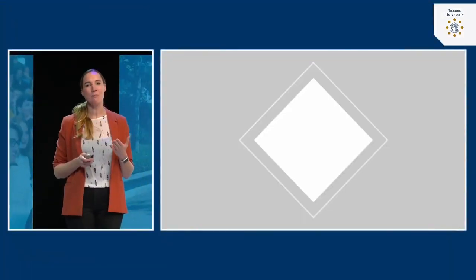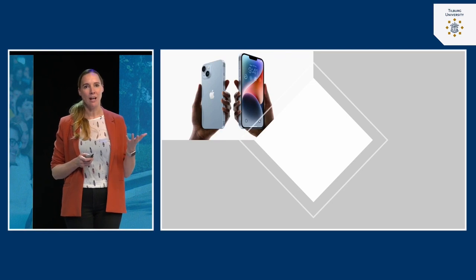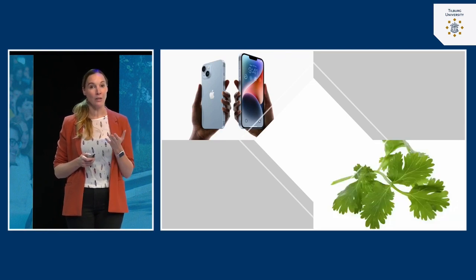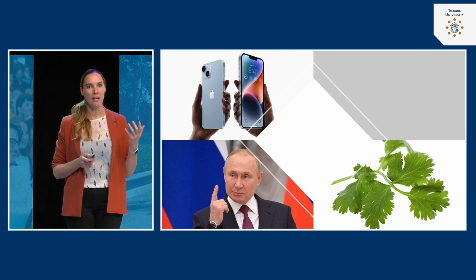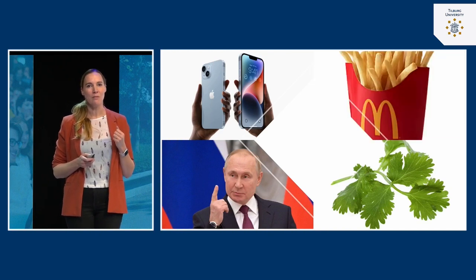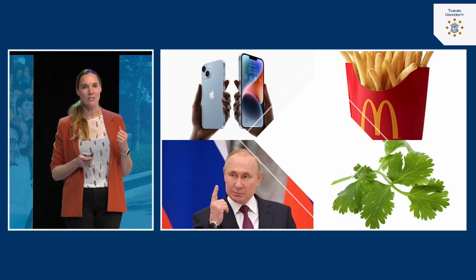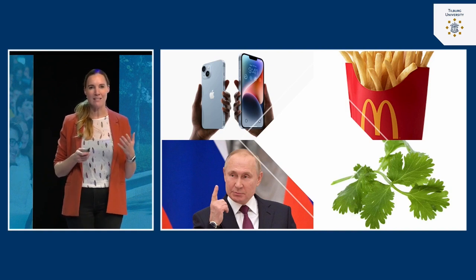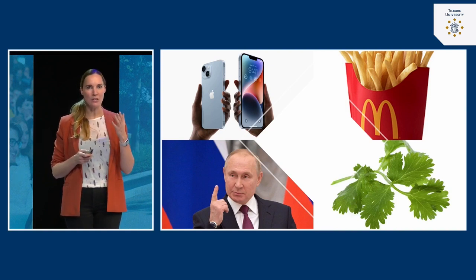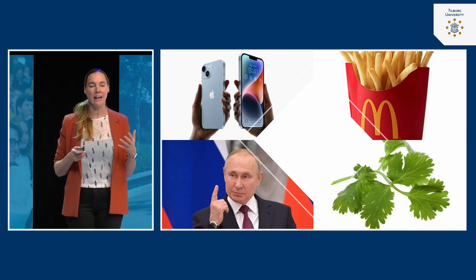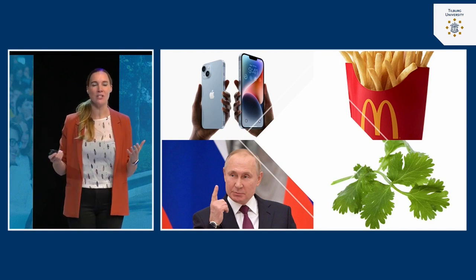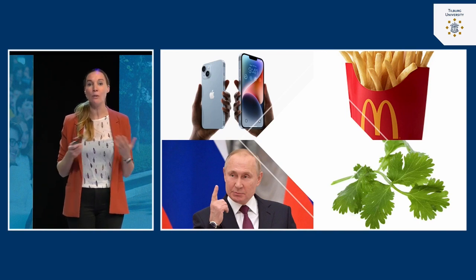So what are attitudes? Let me illustrate this by showing you some pictures. Here you see an iPhone. This is coriander. This guy — I think you all know him — Vladimir Putin. And these are very famous French fries. My guess is that at least with one of these pictures, or maybe even with all of them, you immediately have this sense of like or dislike. You immediately know how you feel about it.